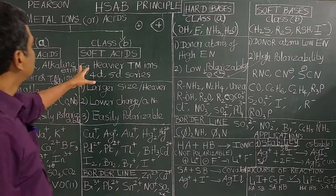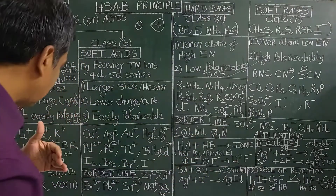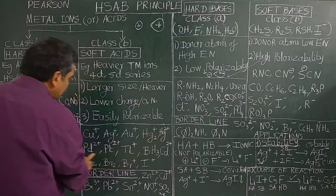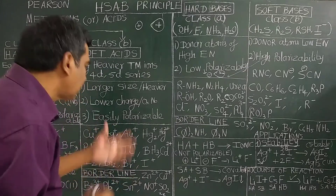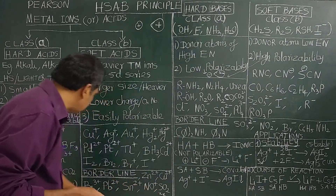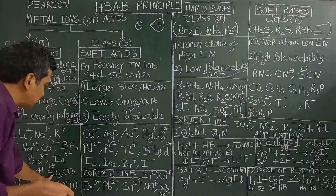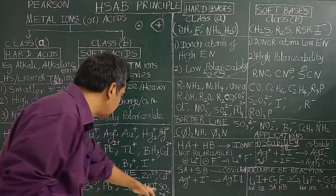Examples of soft acids include Cu+, Ag+, Au+, and metal ions on the right-hand side of the 3d series. Borderline metal ions exhibit both hard and soft acid behavior — they are intermediate between hard and soft acids. Examples are Zn2+, Cu2+, and Bi3+.